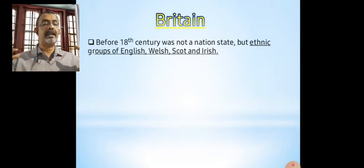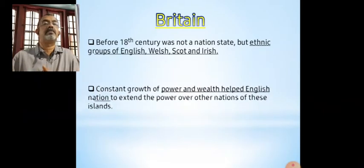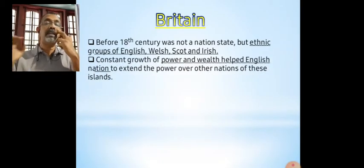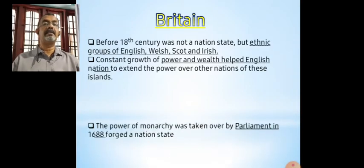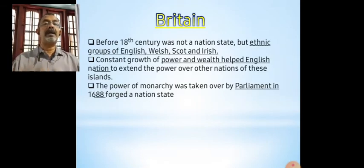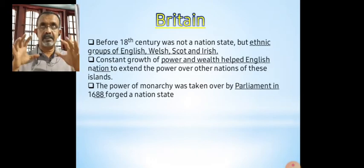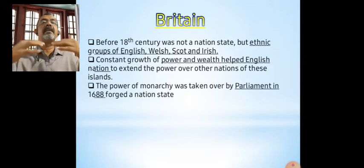The more powerful nation started to expand their power and ambitions over all these ethnic regions. The concept of growth of power and wealth helped England to be a dominant partner. Also, in 1688, at the end of the 17th century, monarchy was taken over by the parliament in England. A nation-state was created with parliament at the centre, and this also gave England an upper hand.